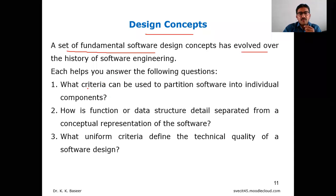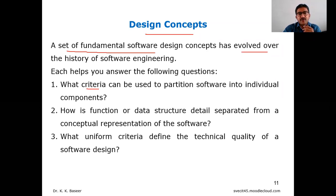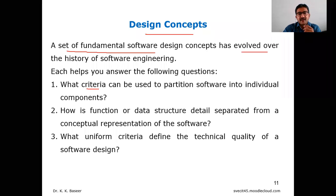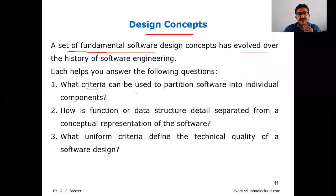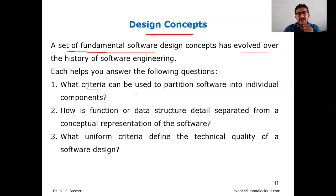First: what criteria can be used to partition software into individual components — that is, when dividing a project into modules, what criteria determines how to divide it into say three, four, five, or six modules? For example, based on schedule like a six-month project needing six parts, or based on the number of departments involved.